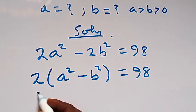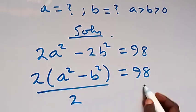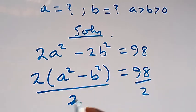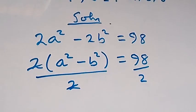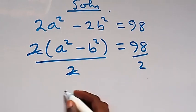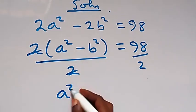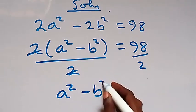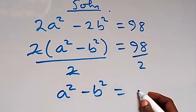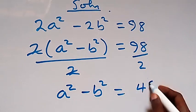Then here, we divide both sides by 2. Then 2, we cancel out here. We have left it. A squared minus b squared equals to 98 divided by 2, here we have 49.